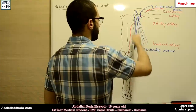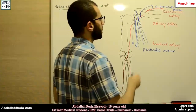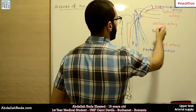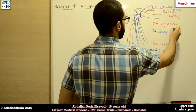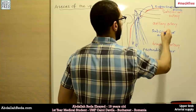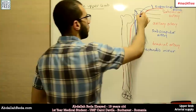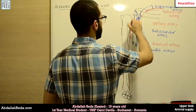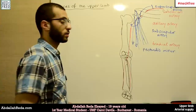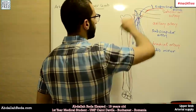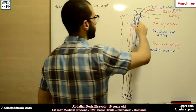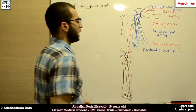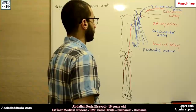Another branch in this course is the subscapular artery — not suprascapular, but subscapular artery. It also gives two branches: one is called the circumflex subscapular artery, where 'circumflex' means it goes in a circle, rounding up to the posterior side of the scapula to supply the muscles there. It gives another branch which also descends in this area and supplies the lateral muscles of the thorax.